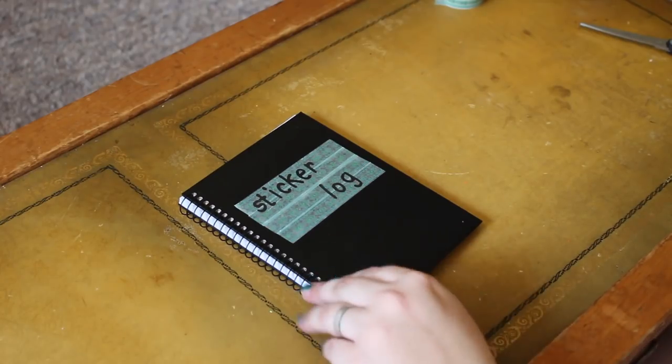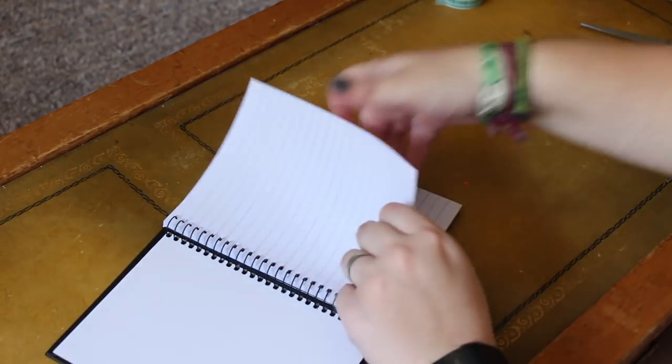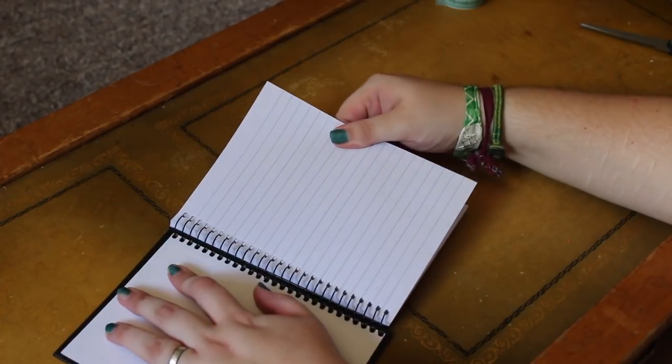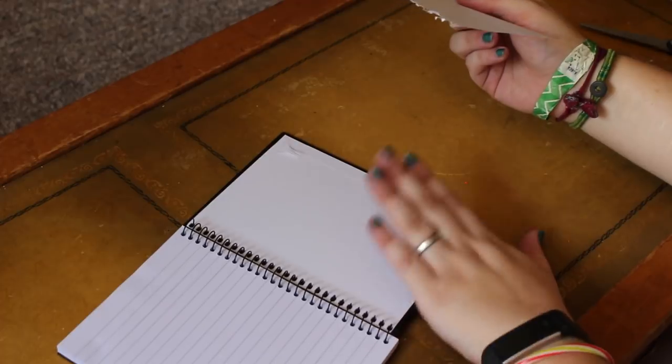Now once the front is all decorated the way you want it, you are going to go into the notebook and rip out the first page. After you do that, flip to the back of the notebook, to the back page.